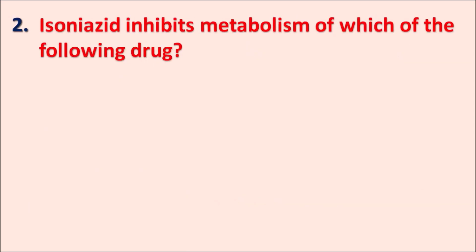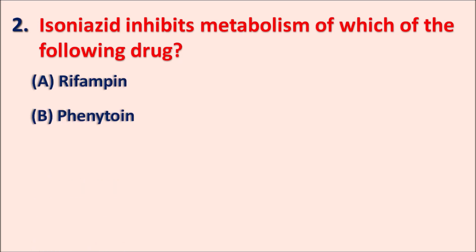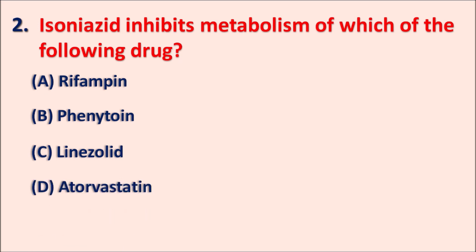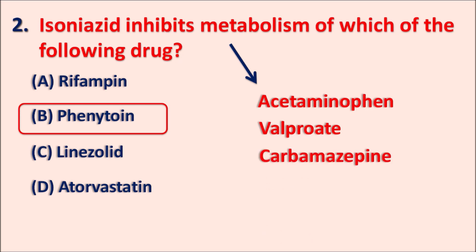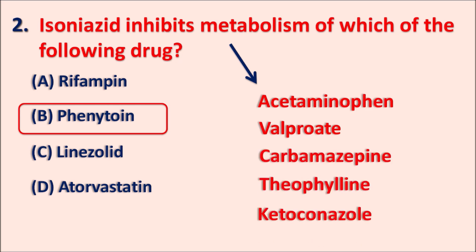Second question: isoniazid inhibits the metabolism of which of the following drugs? Options: A) rifampine, B) phenytoin, C) linezolid, D) atorvastatin. The right answer is phenytoin. Rifampine is not affected — that is why isoniazid plus rifampine can be given together in the multi-drug regimen for tuberculosis. Phenytoin metabolism is inhibited by isoniazid. Isoniazid can also inhibit metabolism of acetaminophen, valproate, carbamazepine, theophylline, and ketoconazole.